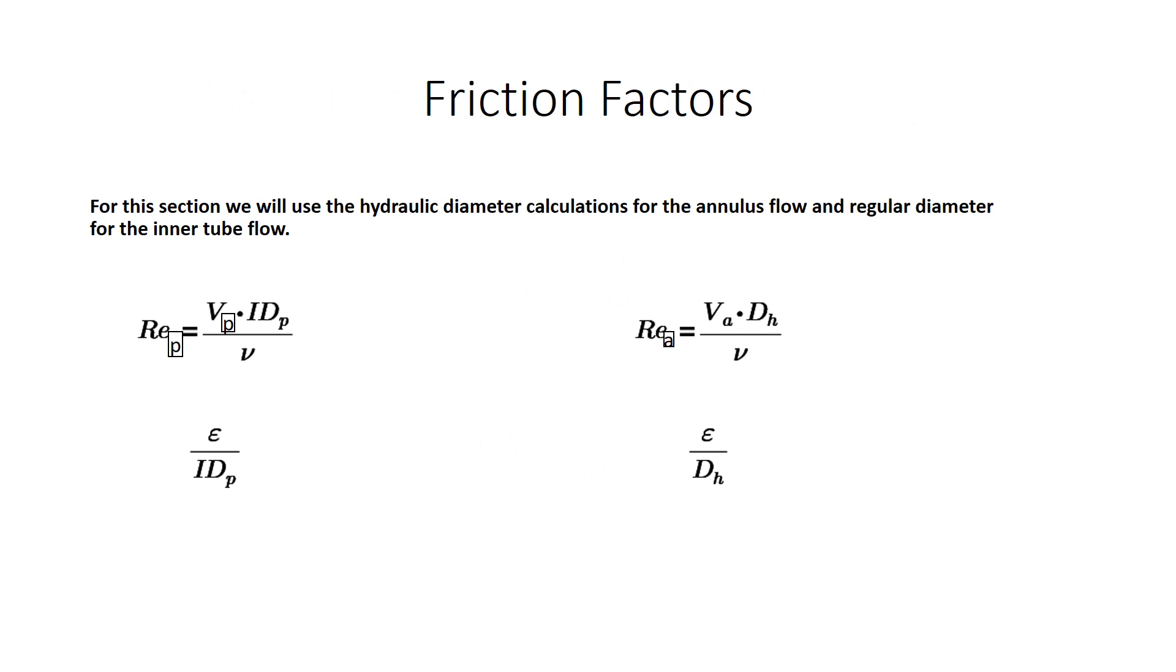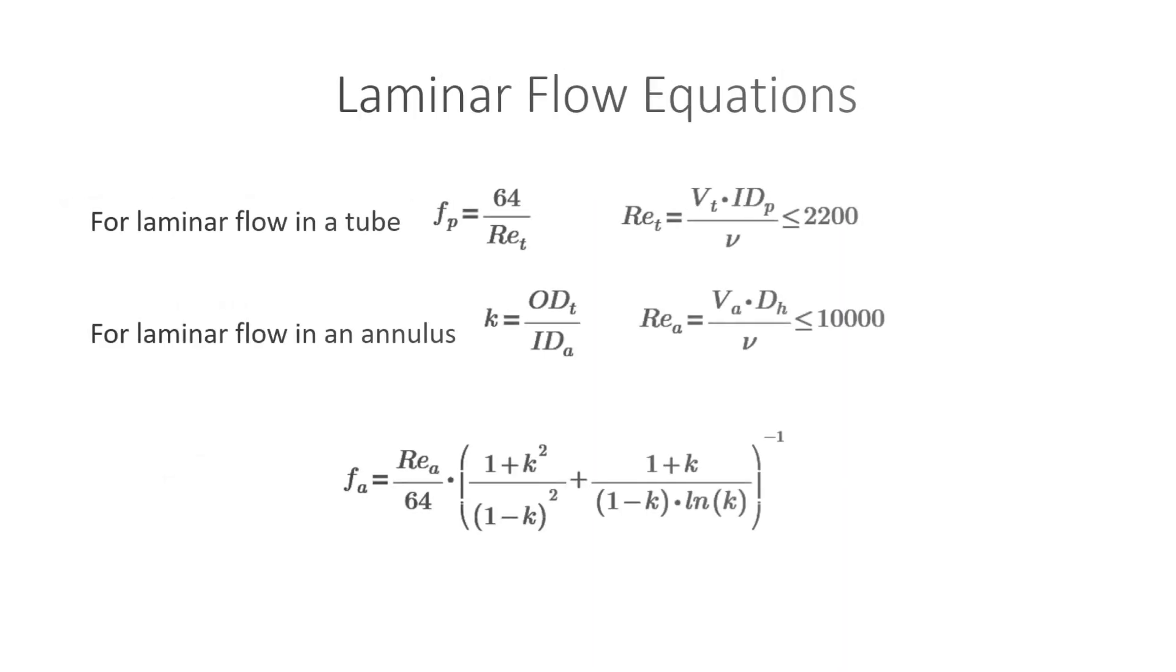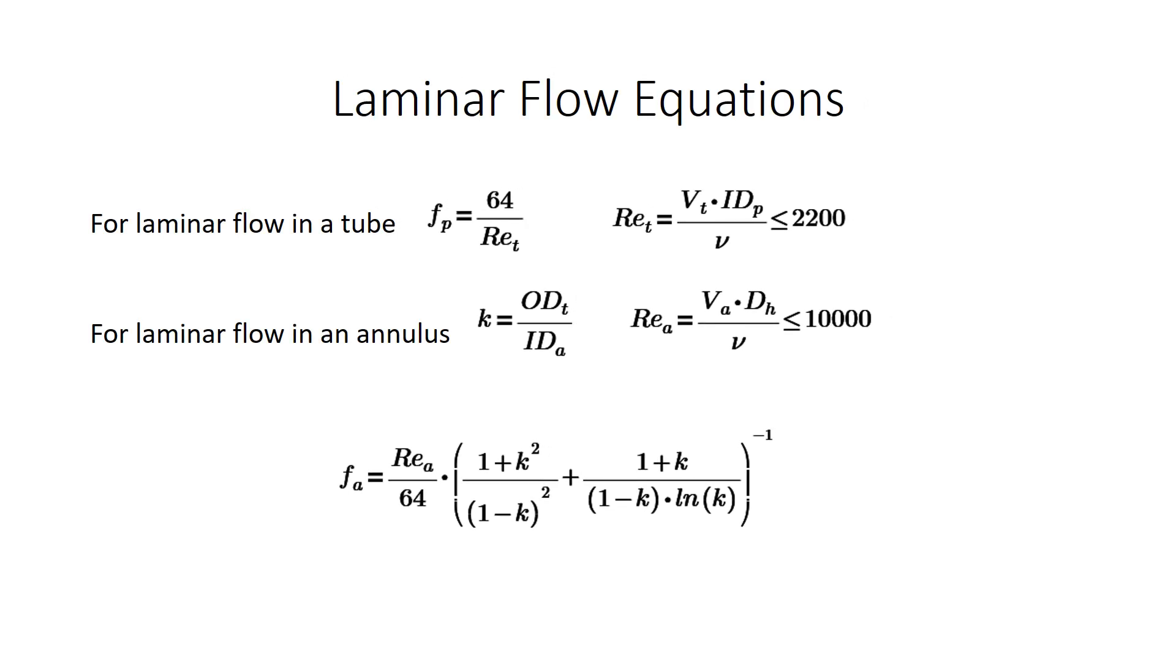Part O, Friction Factors. For this section, we will use hydraulic diameter calculations in the annulus flow region and regular inside diameter for the inner tube flow. Now your inner tube will be the hot region, your annulus will be the cold region under our assumptions. So we first calculate the Reynolds numbers for the tube section and for the annulus flow. Now for your friction factor for laminar flow in the tube, we will use 64 over the Reynolds number for Reynolds number being less than 2200.